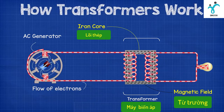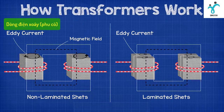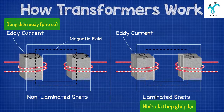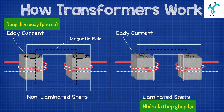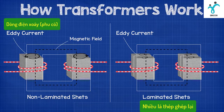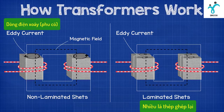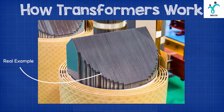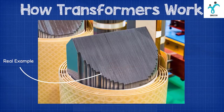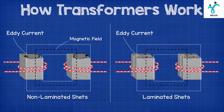Now the use of an iron core is not a perfect solution. Some energy will be lost through something known as eddy currents, where the current swirls around the core and heats up the transformer, meaning that energy is lost as heat. To reduce this, engineers use laminated sheets of iron to form the core, and this greatly reduces the eddy currents.